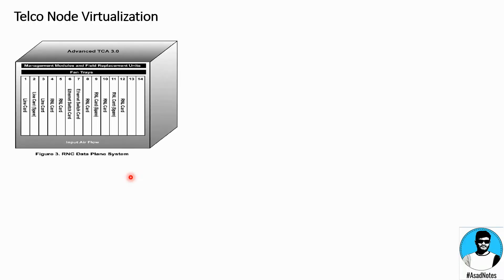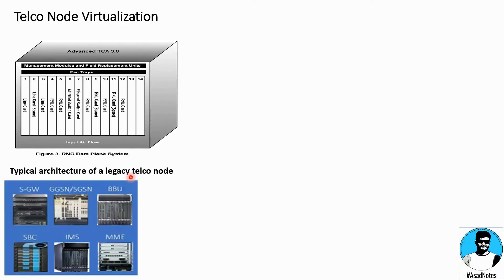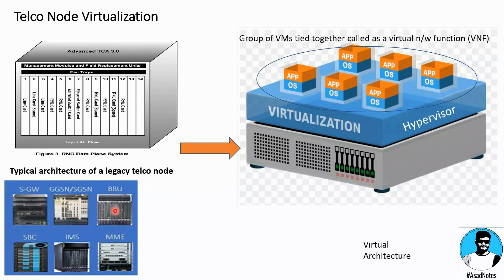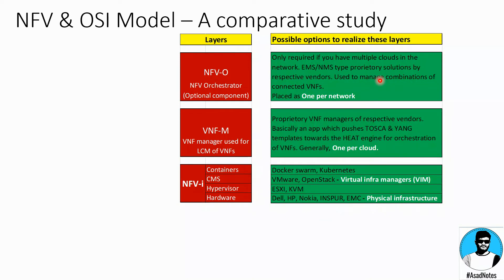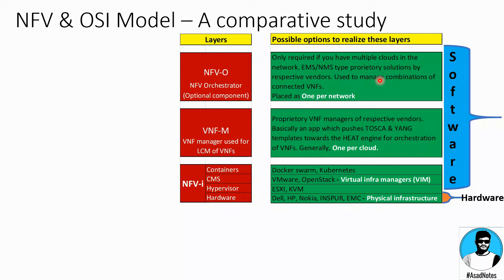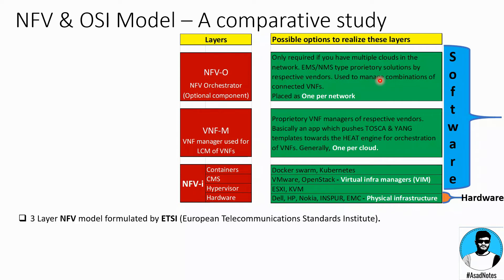Now let's talk about telco node virtualization. Any legacy telco node can be an element from a core network or from radio networks like BBU. The conversion of this telco node in the form of a VNF has to have some set of rules and regulations to support interoperability between different services, products and vendors. Applying the same logic as the OSI model, the NFV model is a 3-layer conceptual framework where the bottom-most layer talks about hardware only and the rest are software layers.